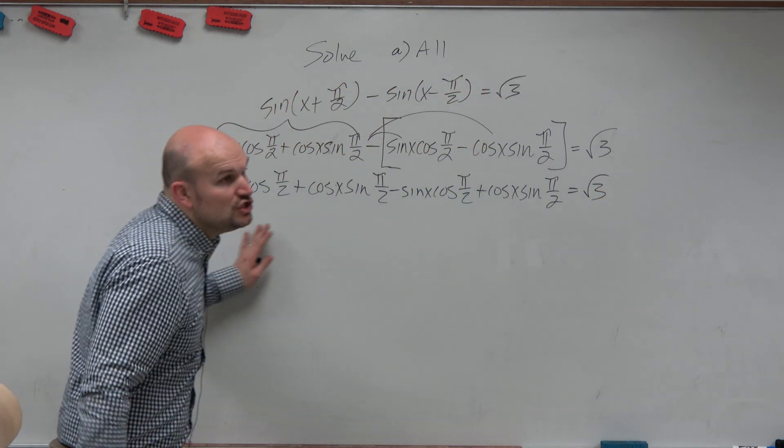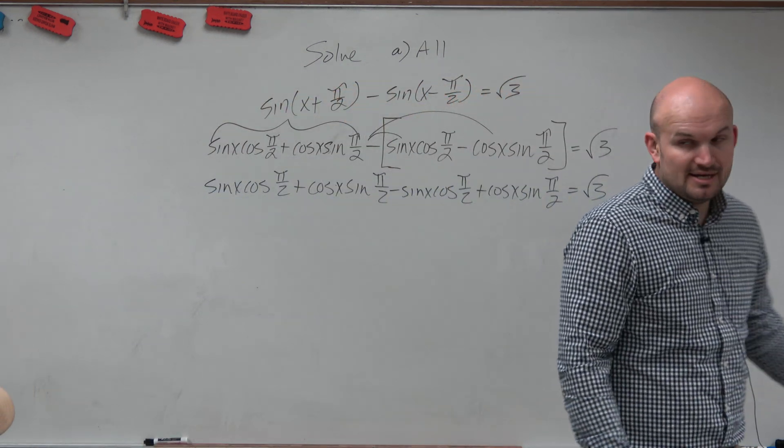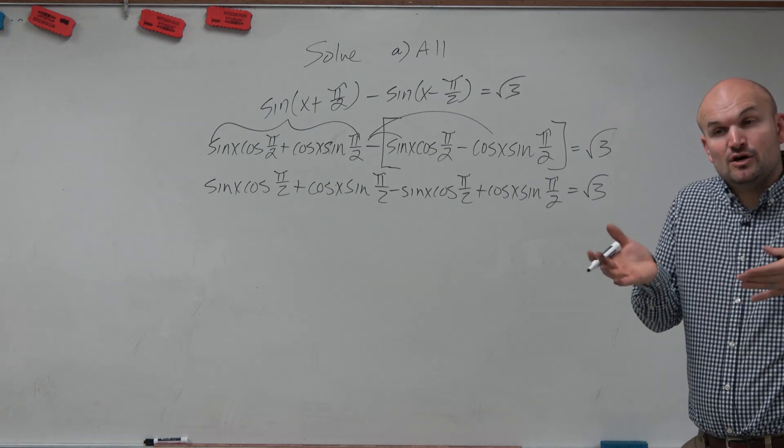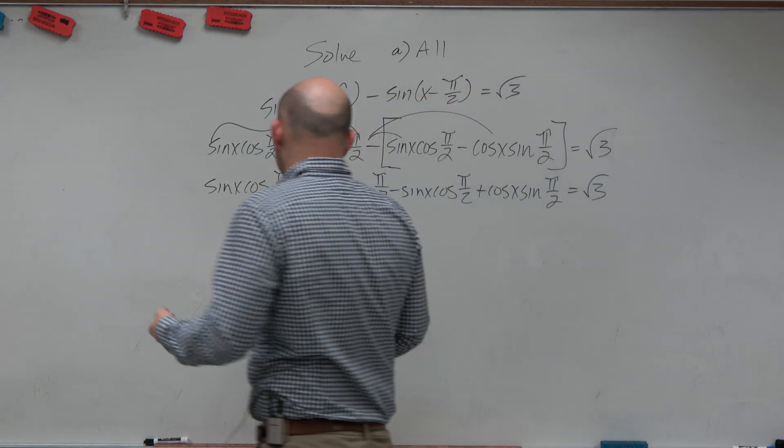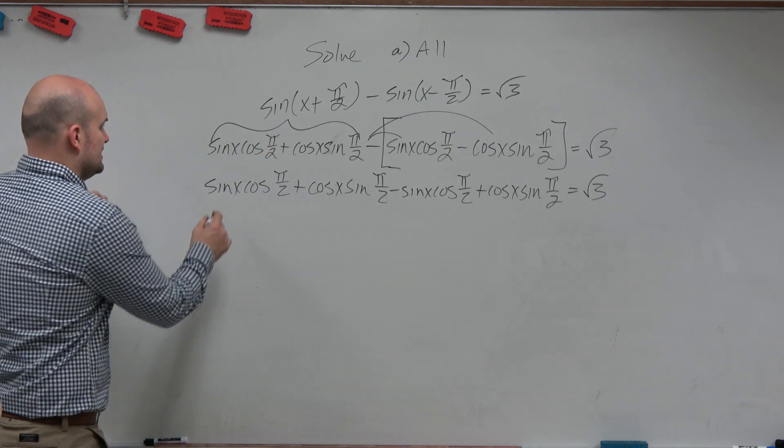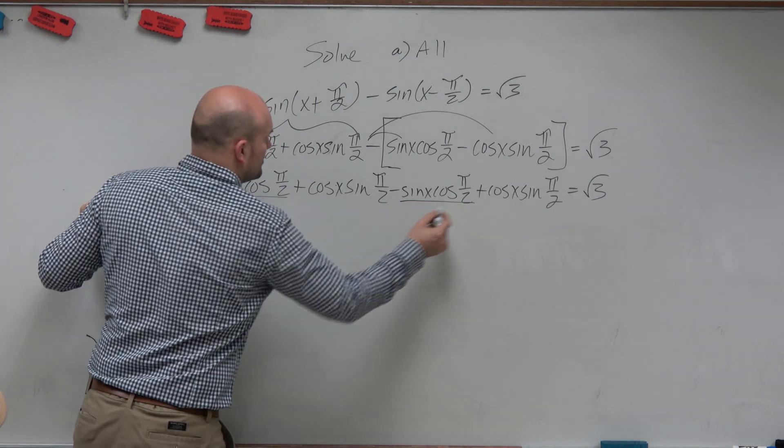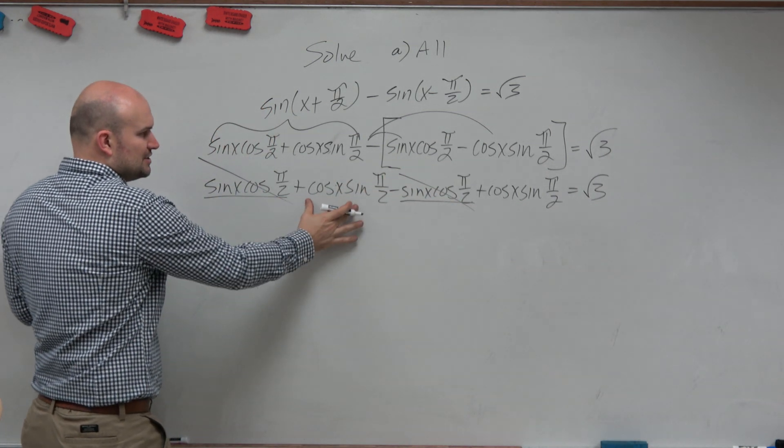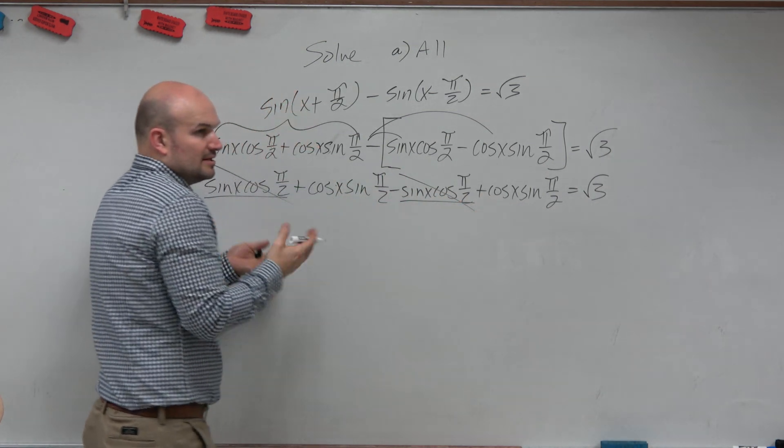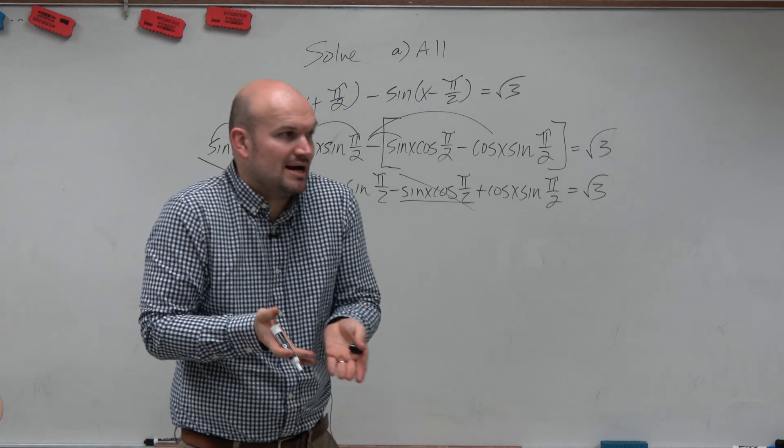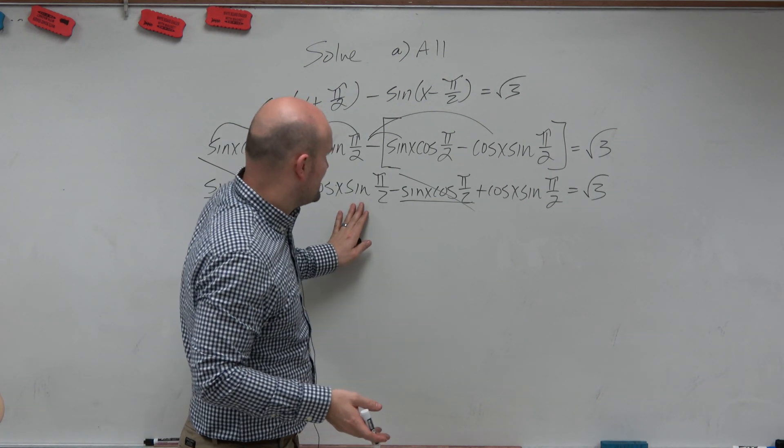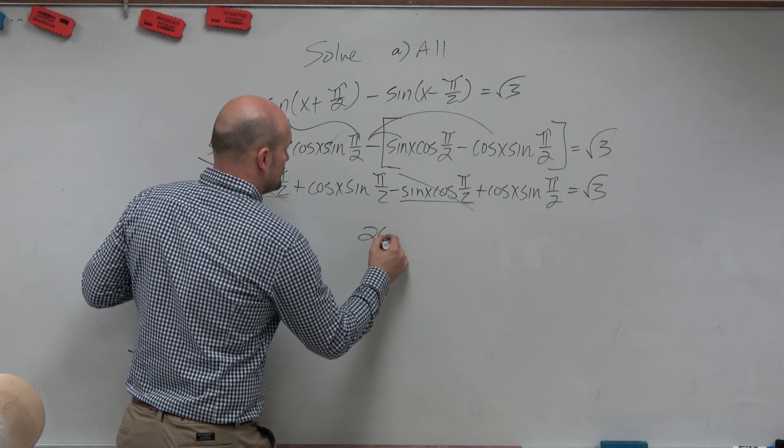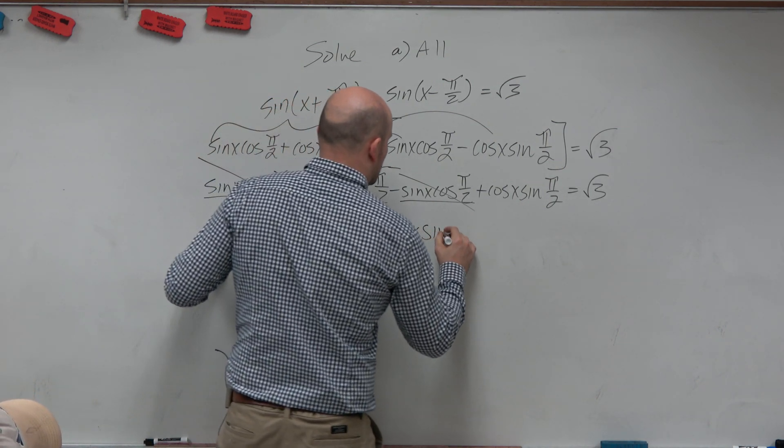So now we have this huge equation. But now let's see if we have like terms, or if we have terms that will maybe add to 0. You can see that these two terms are exactly the same, but one's positive and one's negative. These terms are exactly the same, so we can combine them. Just like x plus x is 2x, cosine of x sine π/2 and cosine of x sine π/2 is going to be 2 cosine of x sine π/2.